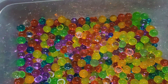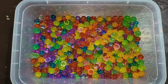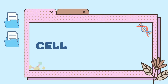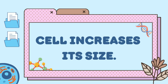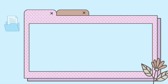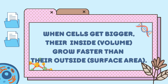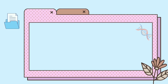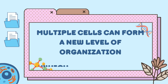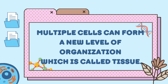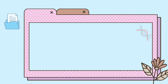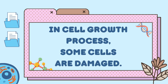In summary, we can conclude the following. Number 1: cells increase in size. Number 2: when cells get bigger, their inside grows faster than their outside. Number 3: multiple cells can form a new level of organization which is called tissue. And lastly, in the cell growth process, some cells are damaged.